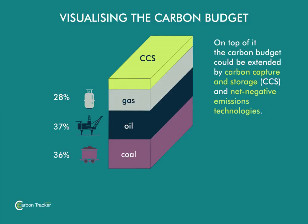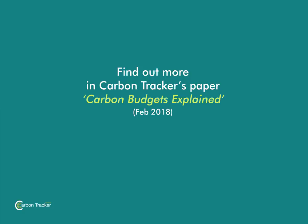Technological solutions such as carbon capture and storage and net negative emissions technologies could serve to extend the 2°C carbon budget and therefore demand for fossil fuels. However, these technologies are unlikely to become commercially viable at scale until the middle of this century, by which point we could be looking at a very different energy and climatic environment. I hope this animation goes some way to outline the key variables at play in the very complex process of estimating carbon budgets, so you can use them more effectively in the future.